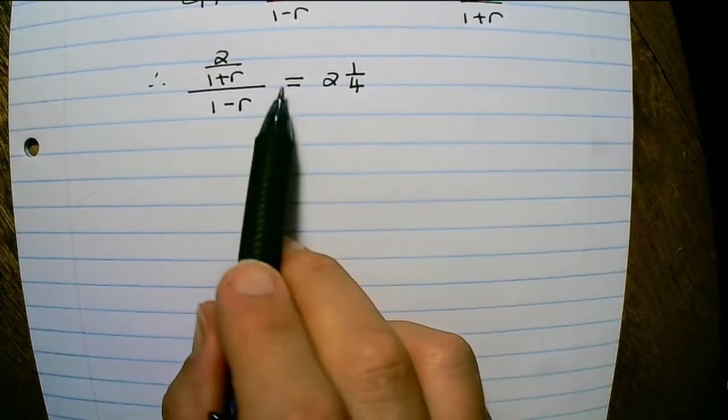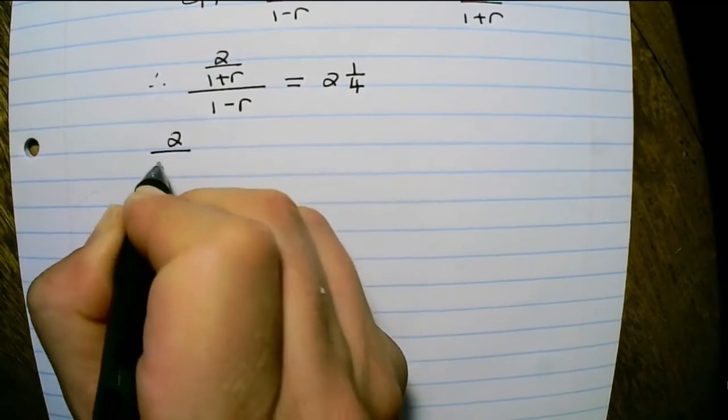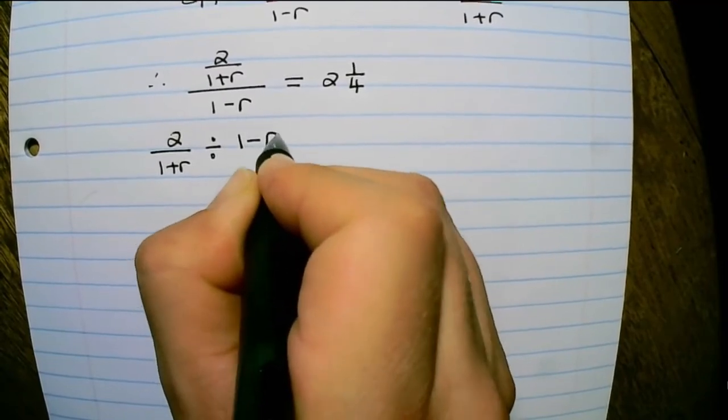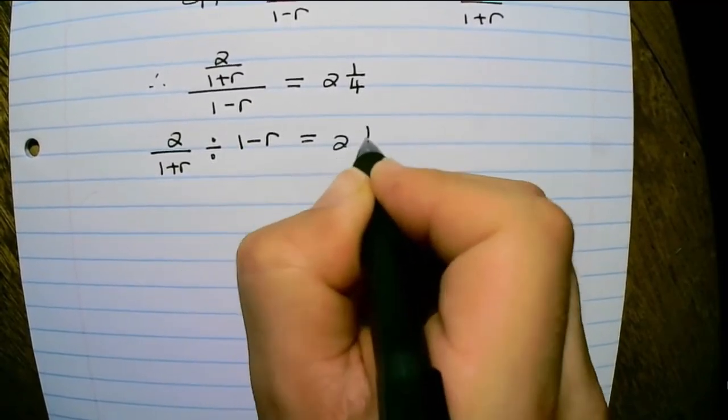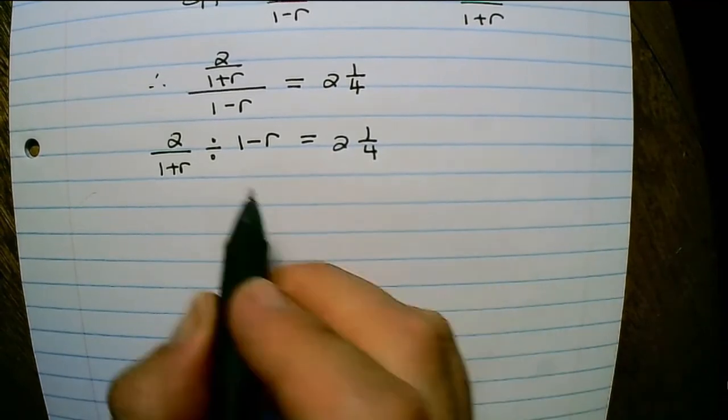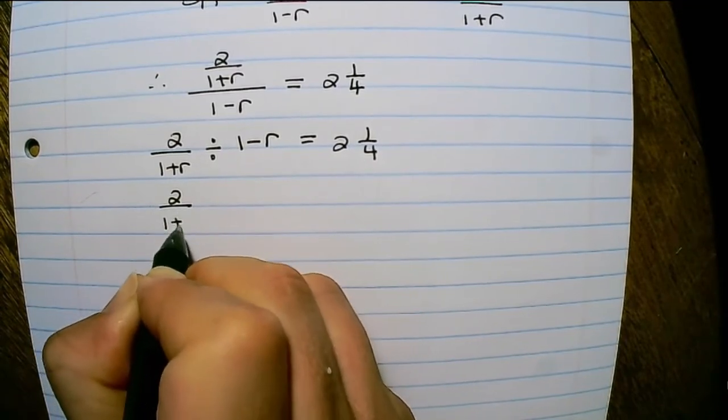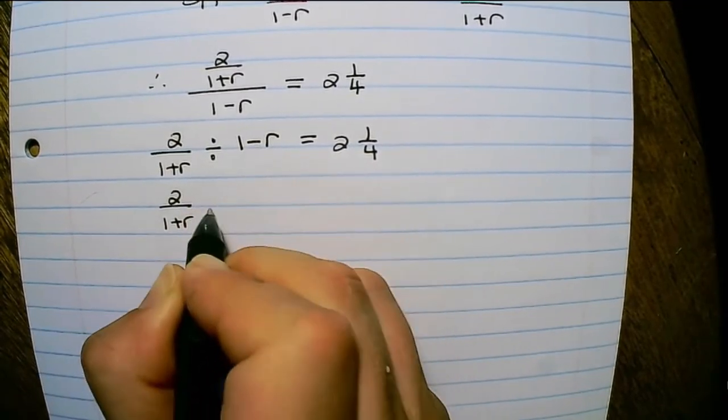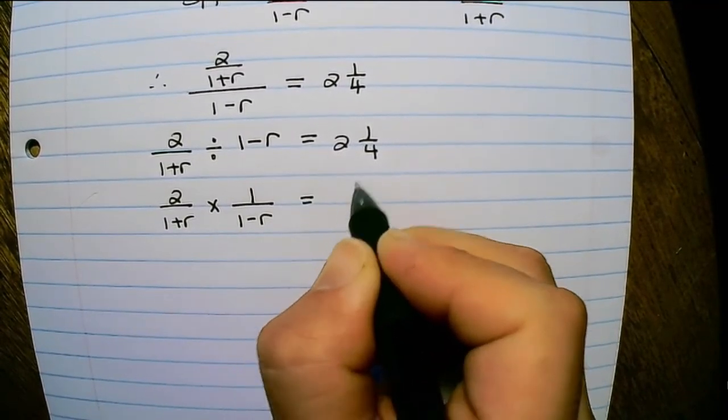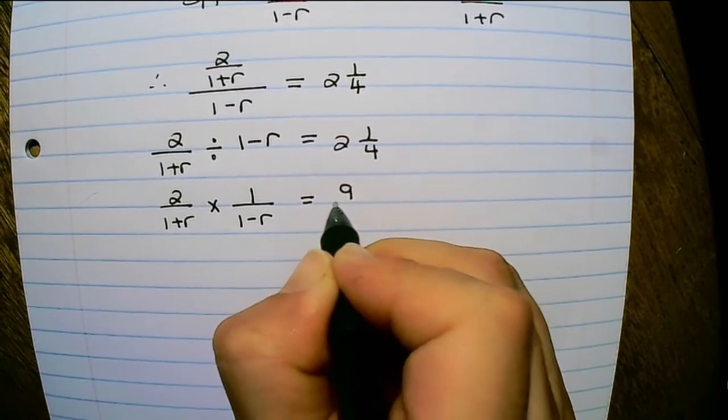Now that can look a little overwhelming, so let's rewrite it. So 2 over 1 plus r, divided by 1 minus r, equals 2 and a quarter. In order to remove the division, I can rewrite 1 minus r as 1 over 1 minus r. And 2 and a quarter can be rewritten as 9 over 4.